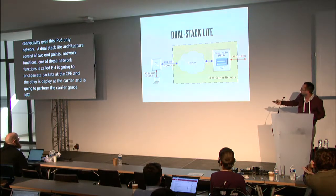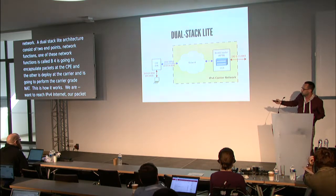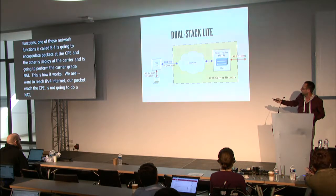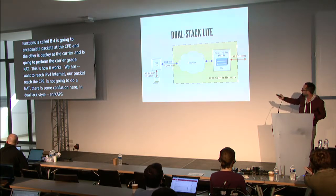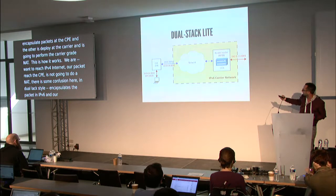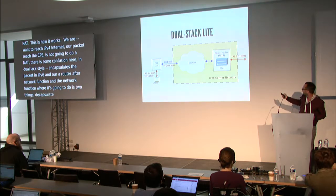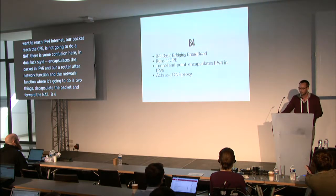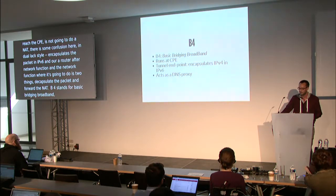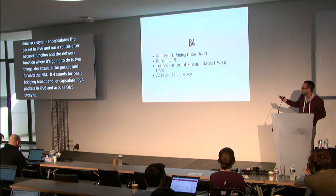This is how it works: we are at the laptop, we want to reach the IPv4 internet, our packet reaches the CPE — in dual stack lite the CPE doesn't do NAT, it just encapsulates the packet in IPv6. Then the packet reaches a border router that executes the AFTR network function, which does two things: decapsulates the packet, performs the NAT, and forwards the packet to the internet. B4 stands for Basic Bridging Broadband, runs at the CPE, is a tunnel endpoint that encapsulates IPv4 packets in IPv6, and acts as a DNS proxy to allow resolving records using IPv6.